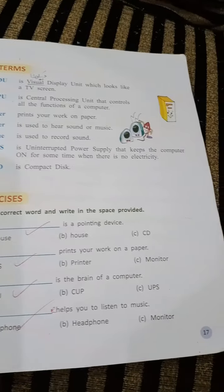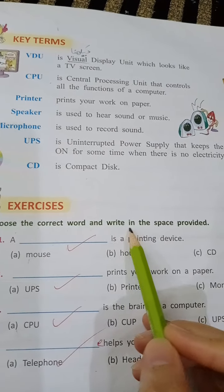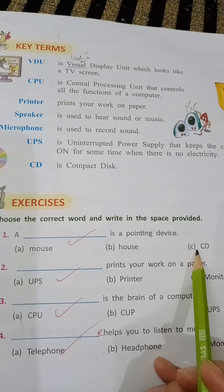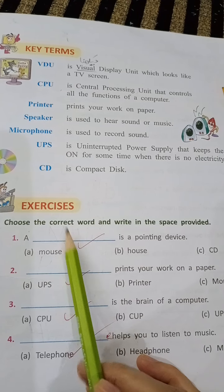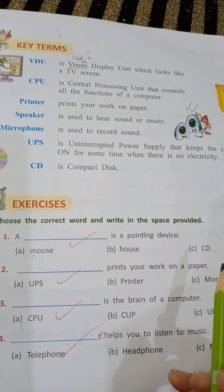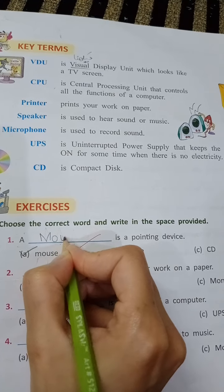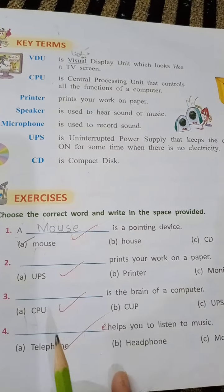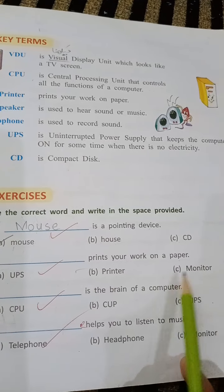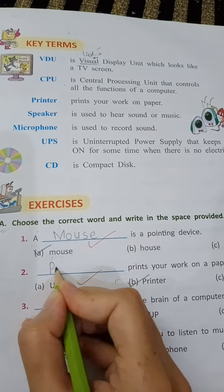Now come to the book work. Open page number 17. Exercise A: choose the correct word and write it in the space provided. First blank: a pointing device — the answer is mouse. Second blank: prints your work on paper — the answer is printer.